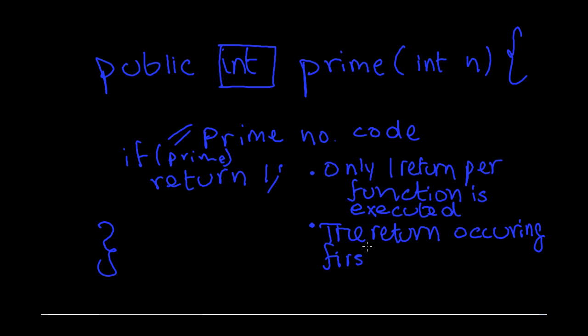Let's say you're going through your prime number code and there's a return before this return. Let's say five - this return five, if it comes before, it'll be returned. So it depends on the control flow of the program.